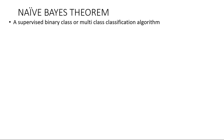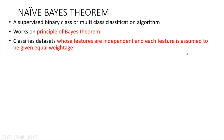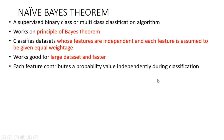Naive Bayes theorem is one of the types of Bayesian learning theorem or algorithm. It can be used for both binary classification as well as for multi-class classification, and it is a supervised learning algorithm based upon the principle of Bayesian theorem. We can use Naive Bayes theorem to classify datasets where the features are independent, each feature is assumed to be given equal weightage, and it works very well for larger datasets and is very fast.